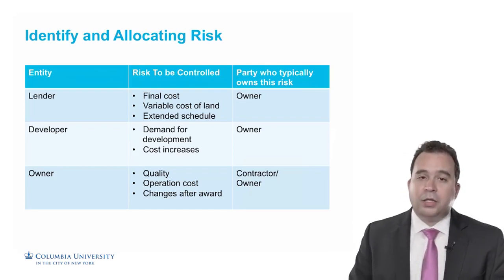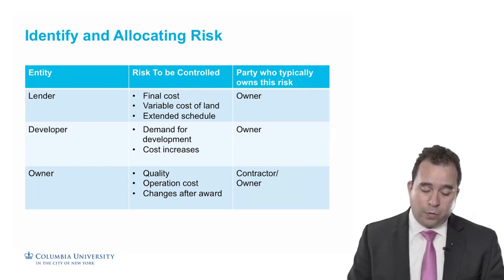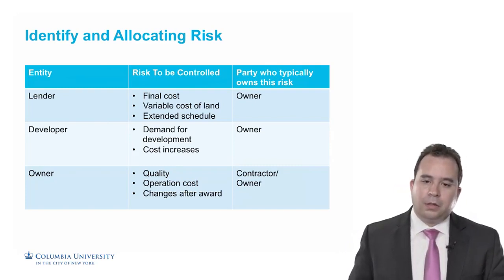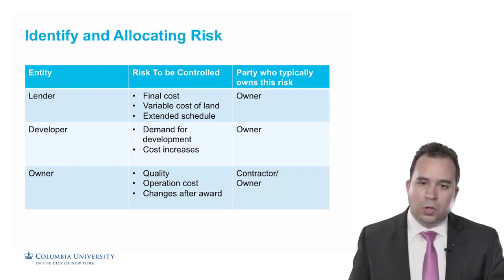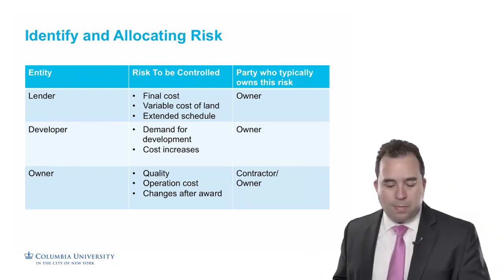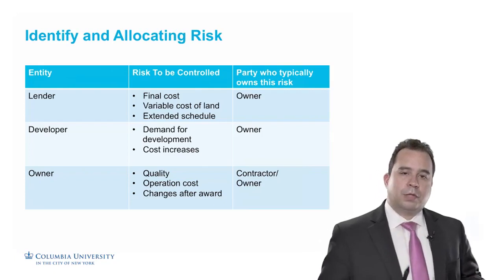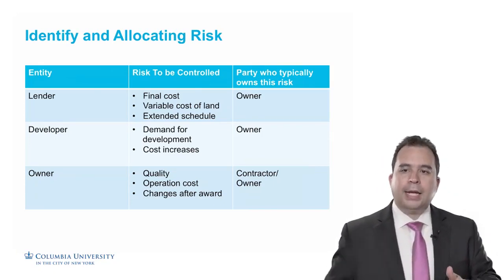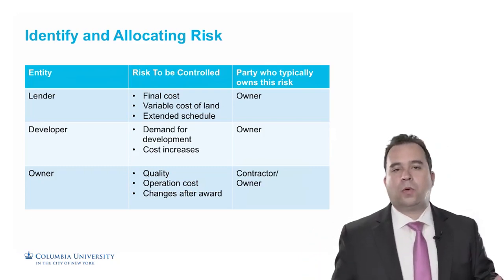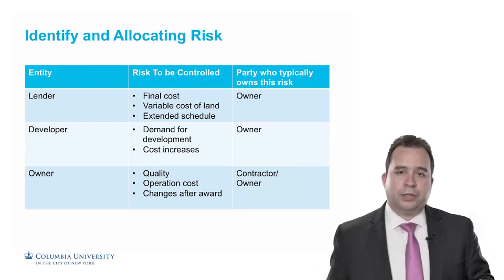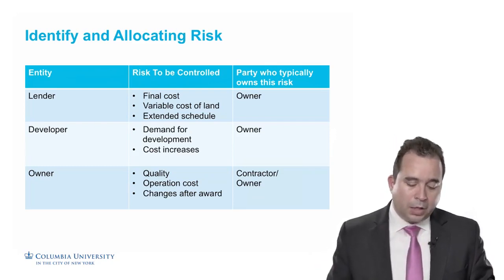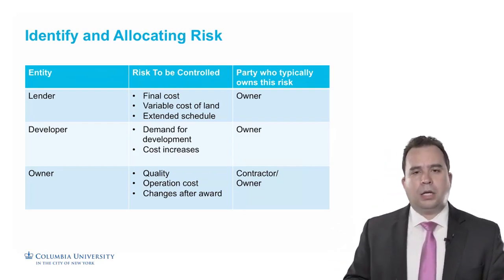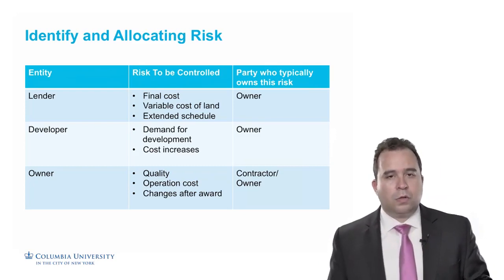As an owner, the major risk is that you must have defined your scope requirements very well. Quality is very hard to define, but you have to find ways to define it clearly, because otherwise you risk not getting the quality of product you wanted, and your operations and maintenance costs may be higher or lower than expected. Any changes after the swap is signed — such as requesting two more laboratories or additional parking spaces — go back to the owner and cannot be included in the original transaction.